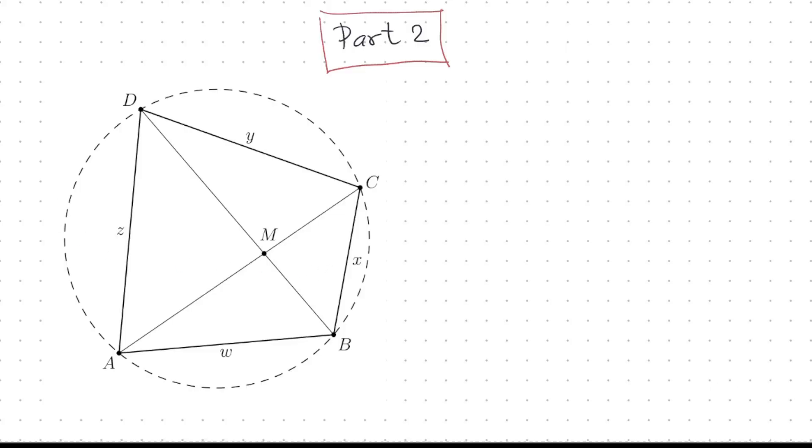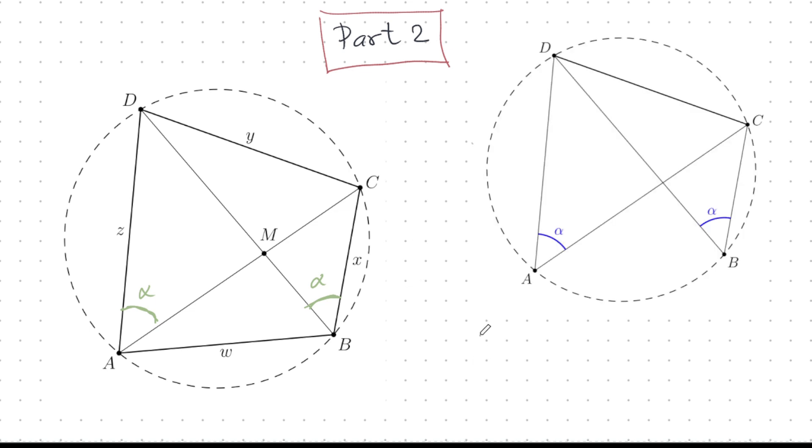Now, if you're good at geometry, you could look at this and you instantly see that these two angles, let's call them alpha, they're the same. And how do we know that? Well, one way to explain it to you is to declutter this figure. I will remove some elements of this figure to make it easier to see.